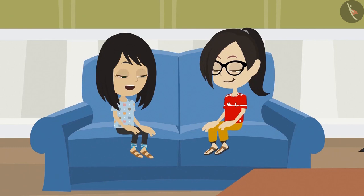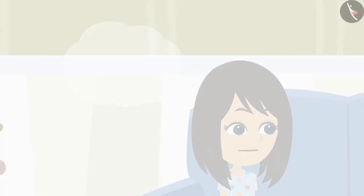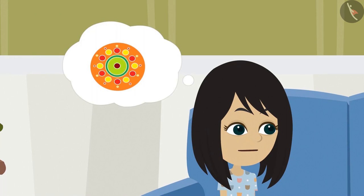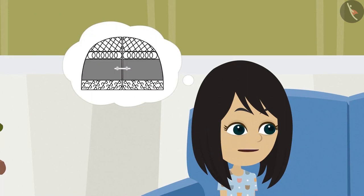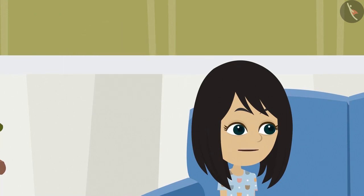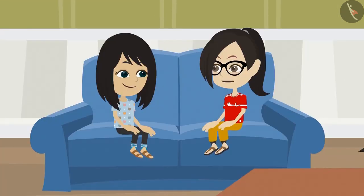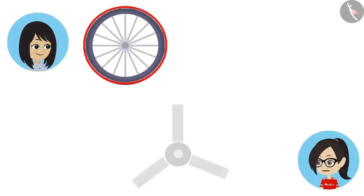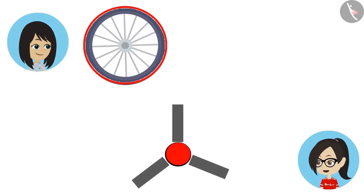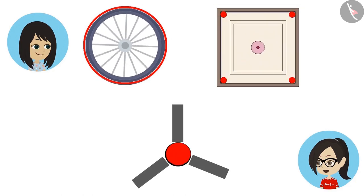It means that a circle can be used to enhance the beauty of an object, or it may be a necessity for an object. Like in Rangoli, Mummy's saree, and the design on the gate, the circle is there to enhance their beauty. Whereas for the wheels of a bicycle, the center part of a fan, and the holes in the carom board, the circular shape is an essential part.